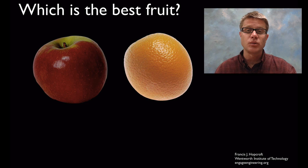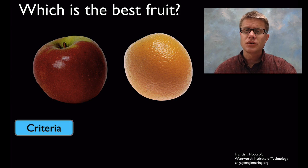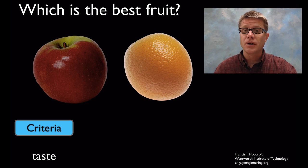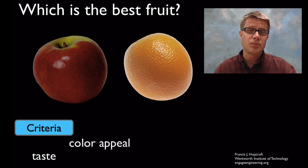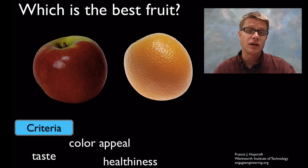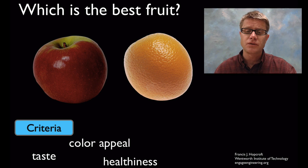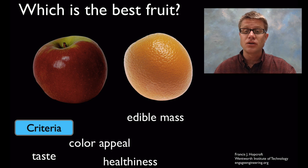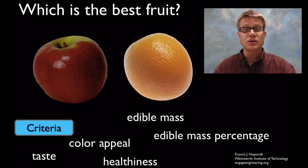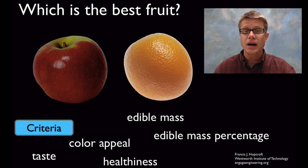Apples or oranges? You might say it's an impossible question. But if you were an engineer, you'd start to identify as many criteria as you can. You could survey people and ask them which tastes better. You could look at color appeal, healthiness, edible mass, or edible mass percentage. In other words, what percent of that fruit are you actually able to eat? Now we can start to quantify the solution for this question: which is the best fruit?